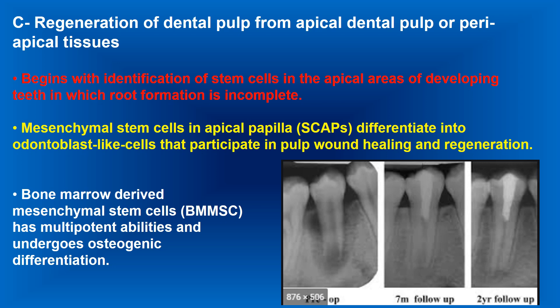Pathway C — regeneration of dental pulp from apical dental pulp or peri-apical tissue — begins with the identification of stem cells in the apical region of developing teeth in which root formation is incomplete. It is important that we choose incompletely formed teeth because the apical end is still open. Mesenchymal stem cells in the apical papilla differentiate into odontoblast-like cells that participate in pulp wound healing and regeneration.